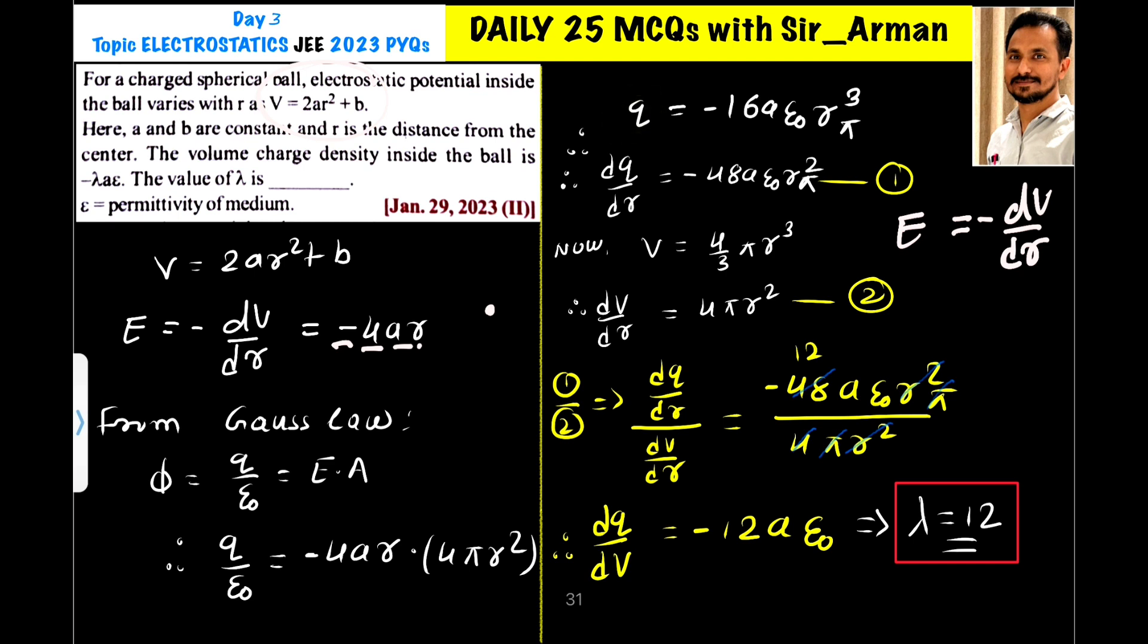Then dQ by dR, I am differentiating this term with respect to R. So if you differentiate, this 3 will come down, so 16 times 3 is 48, so here it will remain with R². So let us call this as our equation number 1.